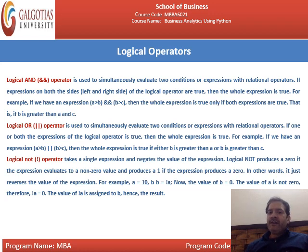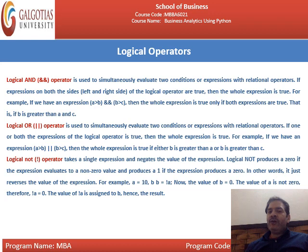The logical NOT operator takes a single expression and negates the value of that expression. Logical NOT produces a 0 if the expression evaluates to a non-zero value, and produces a 1 if the expression produces a 0. In other words, it just reverses the value of the expression. For example, if A equals 10, and B equals NOT A — since the value of A is not 0, NOT A is 0, so the value of B is assigned 0. This is all about the logical operators.